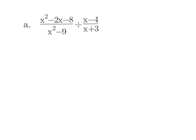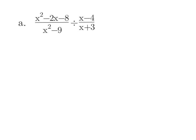For example A, we have x squared minus 2x minus 8 over x squared minus 9, divided by x minus 4 over x plus 3. My first step is copy.flip, so I'm going to leave my first fraction the same, then flip the second fraction to get x plus 3 over x minus 4.